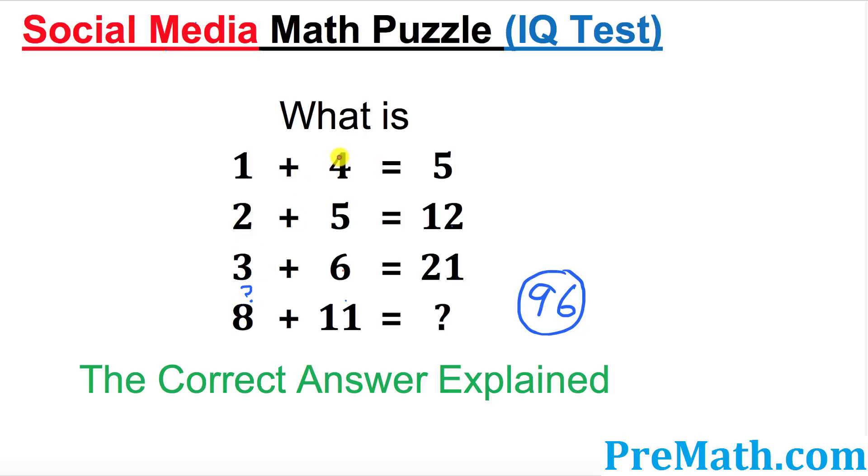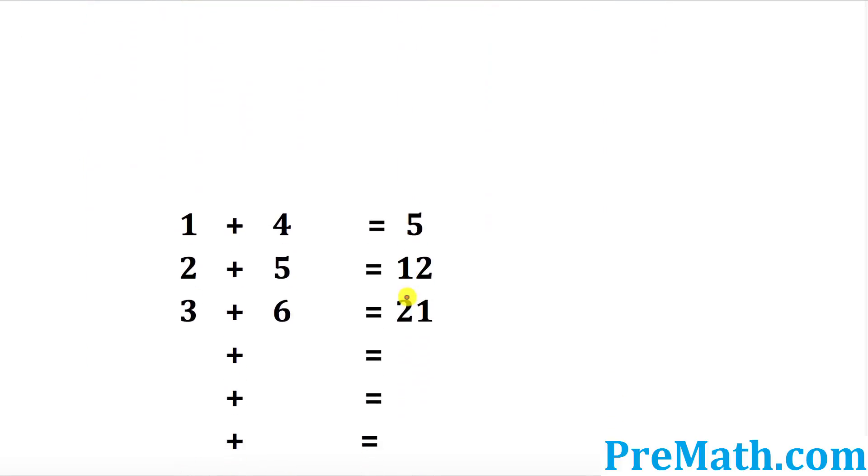Likewise, look at the numbers on the right hand side of these plus signs. What are those numbers? 4, 5, 6 and then few numbers are missing in between 6 and 11. Let's go ahead and fill in the blanks and then we're going to see what we can do.